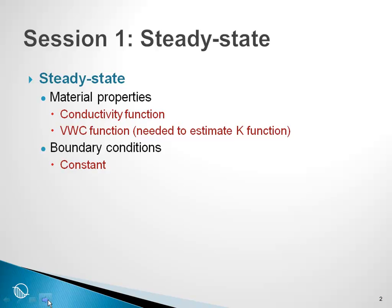Recall that in session one, for steady state analyses, the material properties required included a conductivity function. It was absolutely mandatory to have a conductivity function or at least a conductivity constant. We used the volumetric water content function to estimate the K function, but we did not need it to compute the pore pressure distribution under steady state conditions. Also, in a steady state analysis, boundary conditions were constant and did not change.